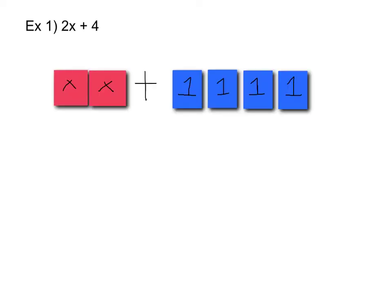Here we have the bar model of 2x plus 4. You notice we have 2 x's and 4 ones, making 2x plus 4. We want to see how we can arrange our 2x plus 4 into equal groups.